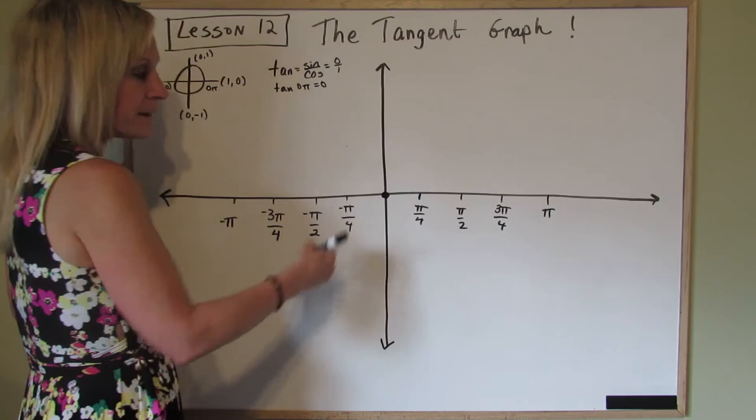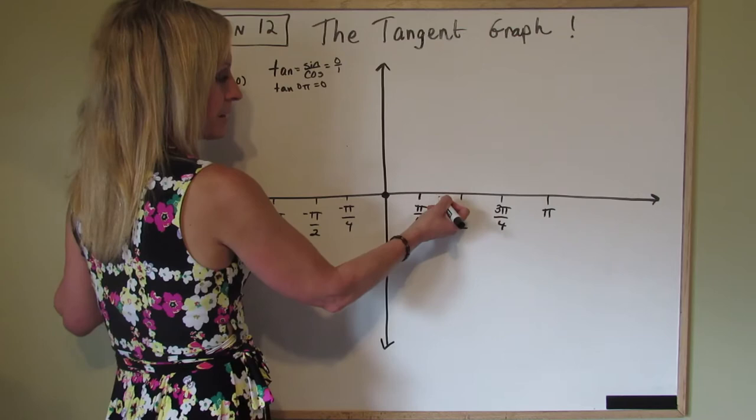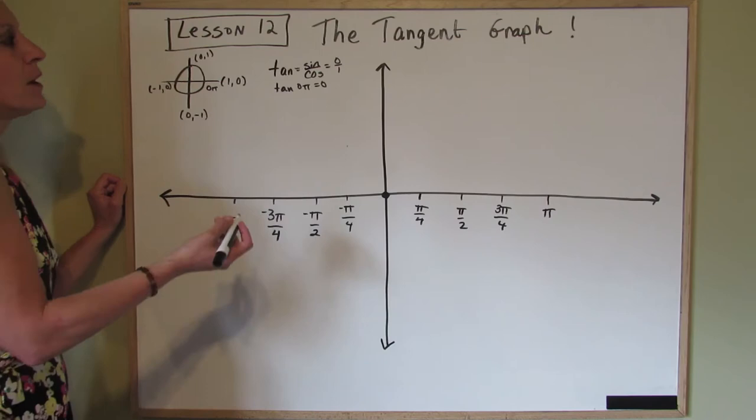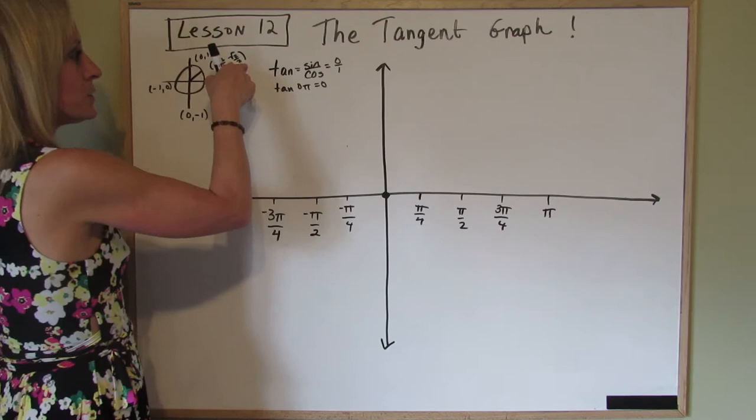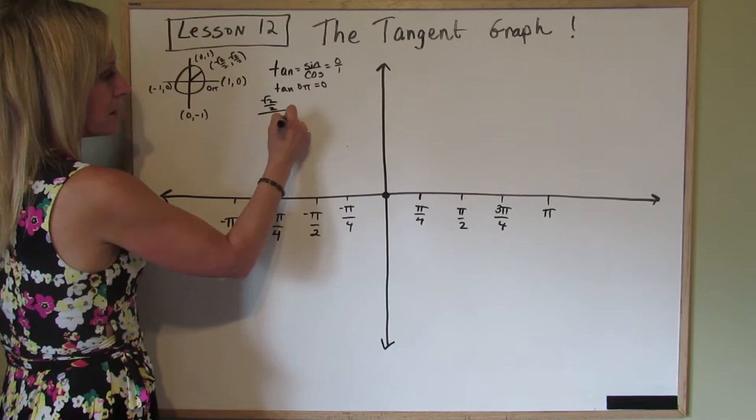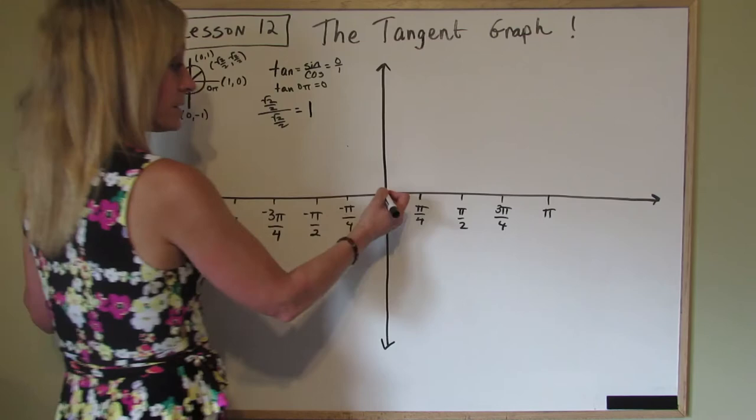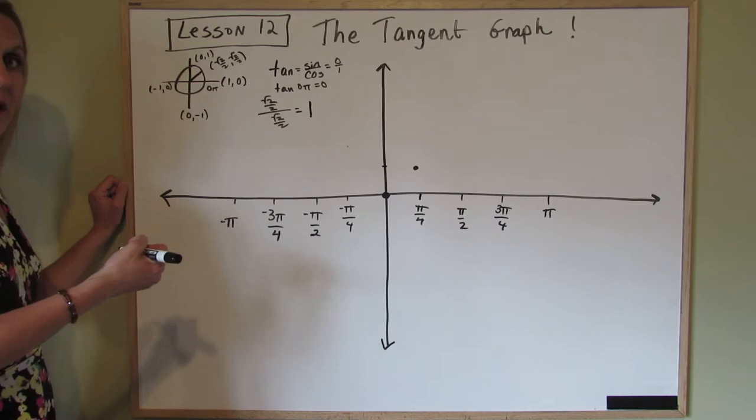Let's plot that. And then the next one I have up here is pi over 4. Now we know that there is a pi over 6 here, and there is a pi over 3 here before we get to pi over 2. But let's just go to pi over 4 and see what happens. So pi over 4 is our 45 degrees, and if you remember, the ordered pair is square root of 2 over 2 over square root of 2 over 2. So if we put that sine over that cosine, anything over itself is 1. So the tangent of pi over 4 is 1.